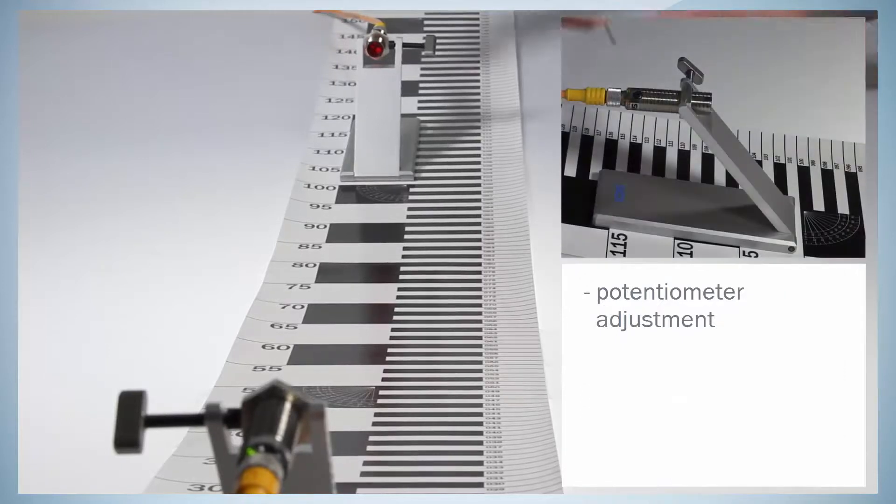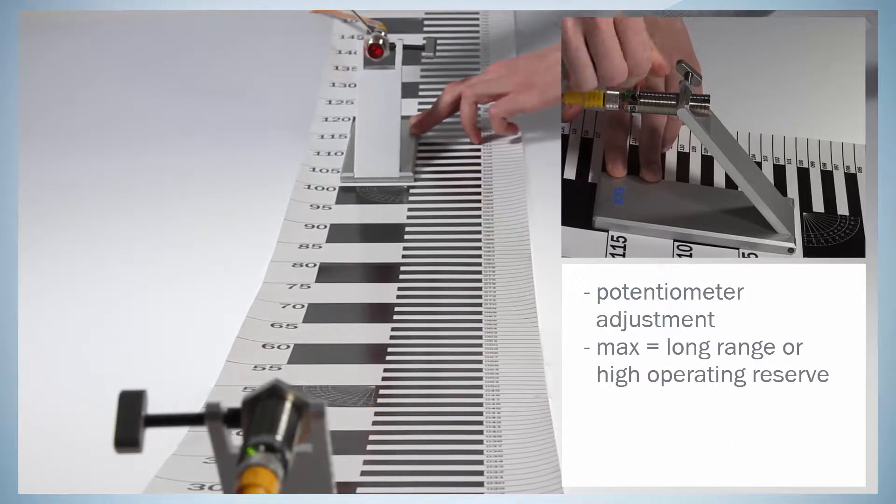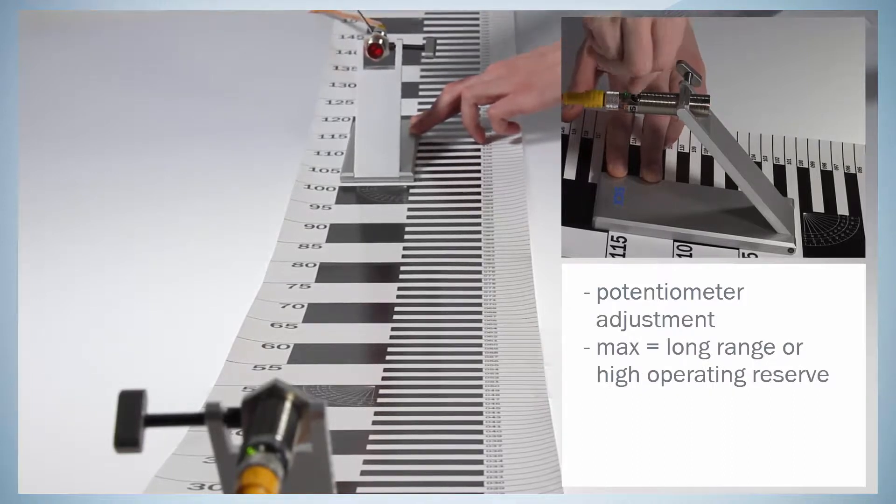Use the potentiometer to adjust the system's sensitivity. If long range or high functional reserve is needed, go for the maximum distance.